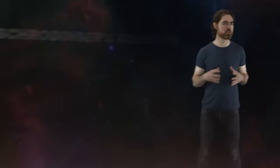Relativity tells us that the passage of time depends on velocity. So the Schrodinger equation only works for slow moving objects. That's a problem. Subatomic particles are often moving at close to the speed of light.